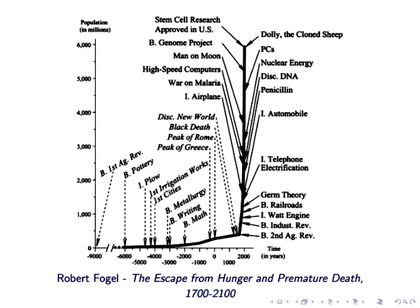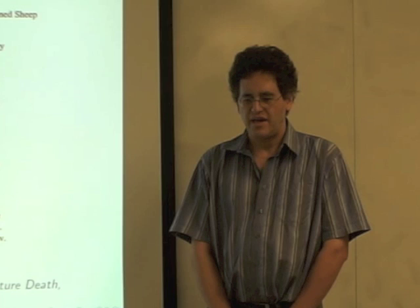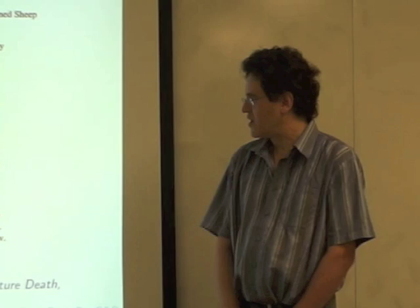Obviously this trend of population can't continue. Something's got to give. And so we're entering a moment of transition and it's the transition between the time when humans can treat the Earth as essentially infinite and the time when we realize that there are actually limits to how much of various resources we can use from the Earth and how much area there is for human settlement.